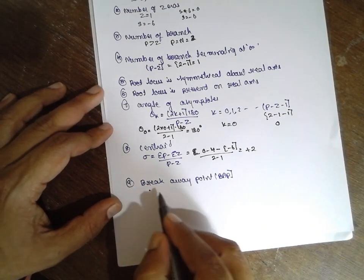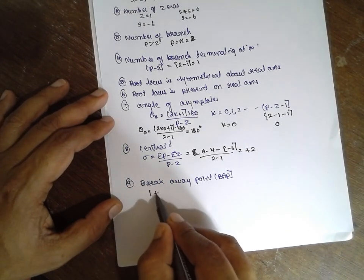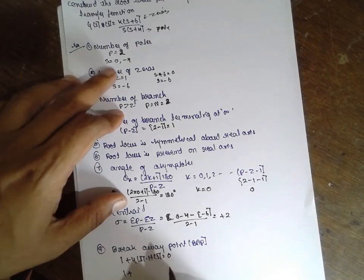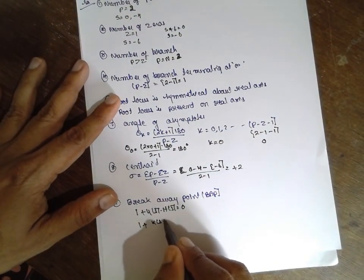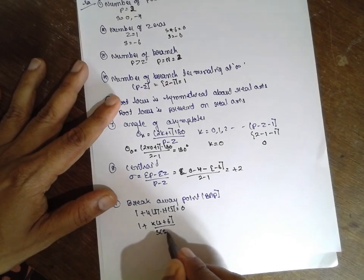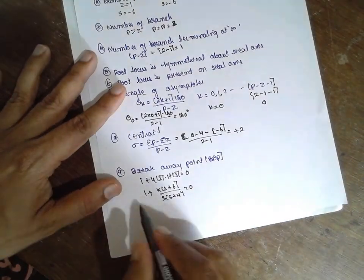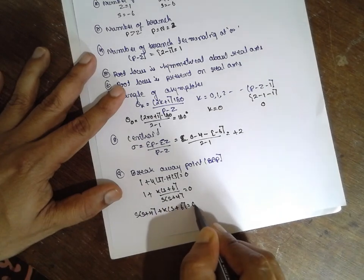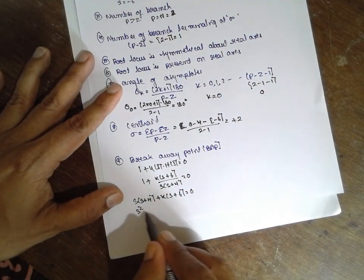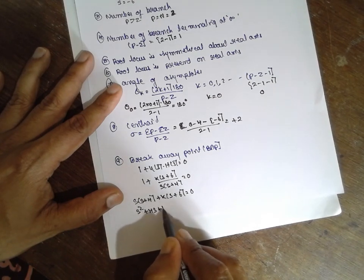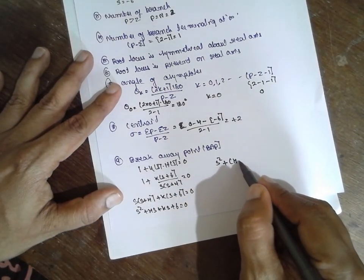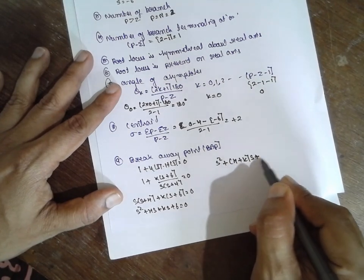Now breakaway point. Breakaway point is nothing but 1 plus G(s)H(s) equals 0. Now it's s plus k times s plus 6 divided by s times s plus 4 equals 0. This can be written as s times s plus 4 plus k times s plus 6 equals 0. Next, s squared plus 4s plus ks plus 6k equals 0.